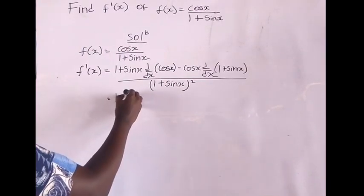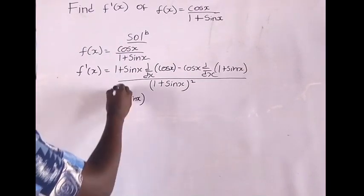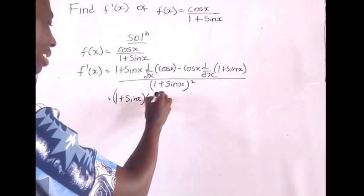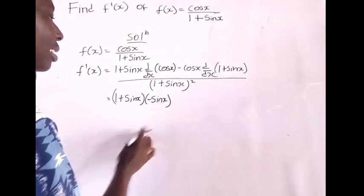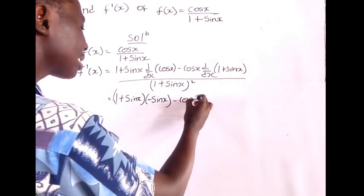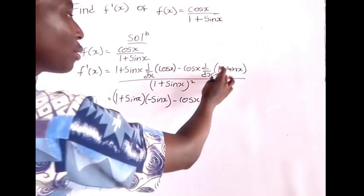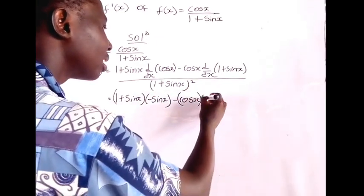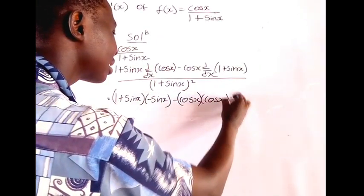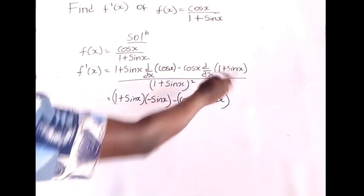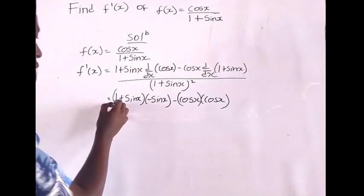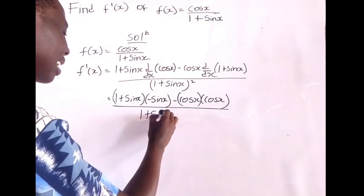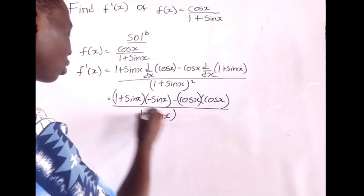So we have (1 + sin x) into the derivative of cos x, which is −sin x, minus cos x into the derivative of (1 + sin x), which is cos x — because the derivative of 1 is 0 and the derivative of sin x is cos x — all over (1 + sin x) squared.